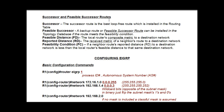Successor and feasible successor routes: the successor route is simply the best route — the route in the routing table that DUAL computes to find the best route to a destination network. A feasible successor is a backup route stored in the topology table. To qualify as a feasible successor, the route must meet the feasibility condition: the neighbor's reported distance to a destination network must be less than the local router's feasible distance. The feasible distance is your router's total distance to a given network, and the reported distance is what gets reported to you from other routers. You calculate a composite metric to determine your feasible distance.